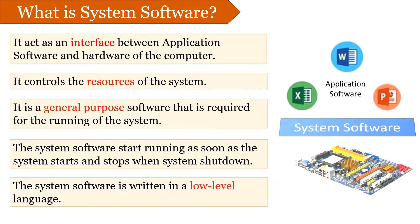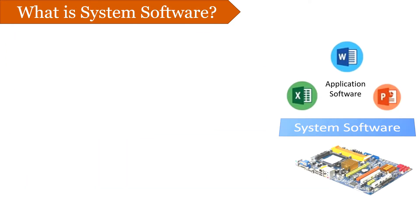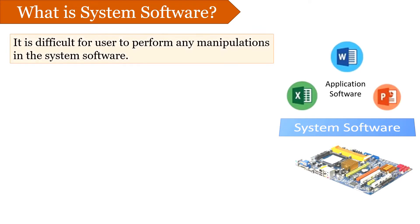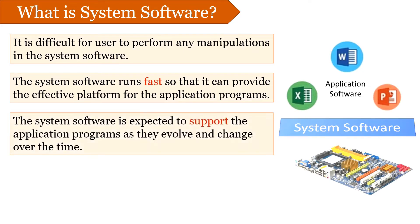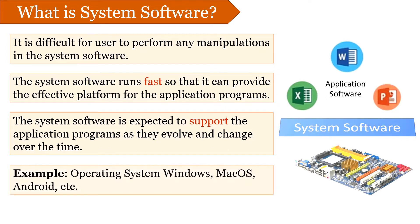The system software is written in a low-level language and hence it is difficult for general users to perform any manipulation in system software. The speed of system software should be fast enough so that it provides an effective platform for application programs. It is expected that system software will support application programs even if they evolve and change over time. Examples of system software are operating systems such as Windows, Mac OS, Android, etc.